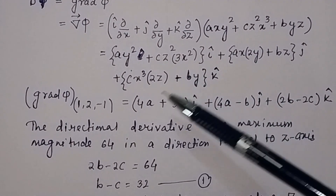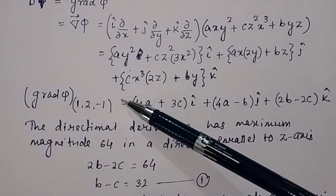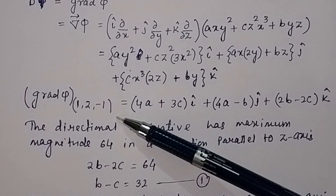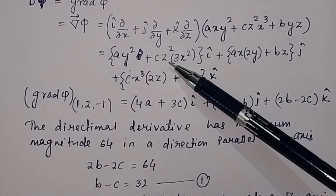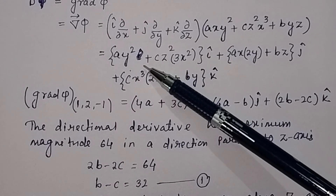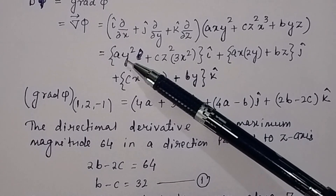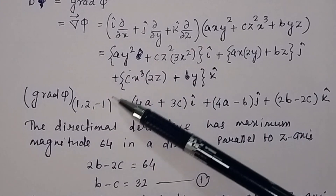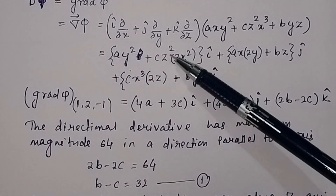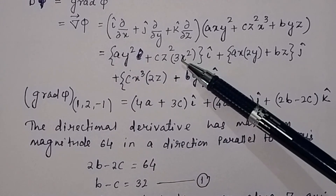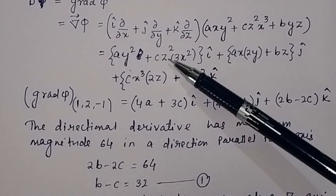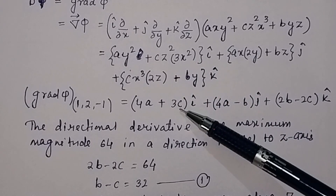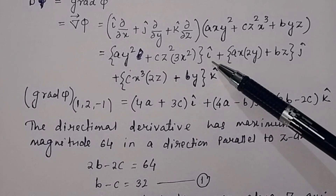Now we evaluate the gradient at the point (1, 2, -1), since the directional derivative has maximum value at that point. Substituting x=1, y=2, z=-1: for the i-component, y² = 4, giving 4a. For the second part, z² = (-1)² = 1, and x³ = 1, so the term is 3c. So the i-component is (4a + 3c) i-cap.